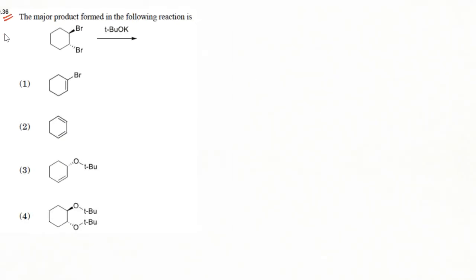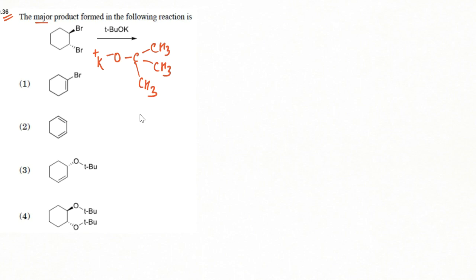This question is from Section B — the major product formed in the following reaction. This is a very simple reaction: we have trans-1,2-dibromocyclohexane, and the base given is potassium tertiary butoxide. As you can see, this is a bulky, non-nucleophilic base.